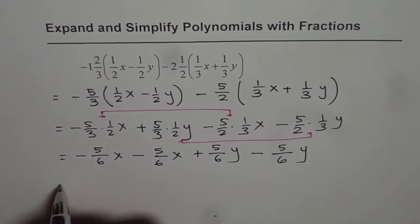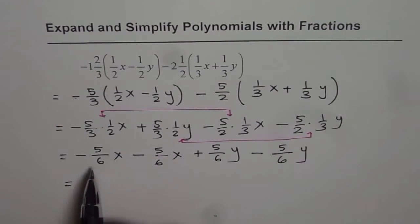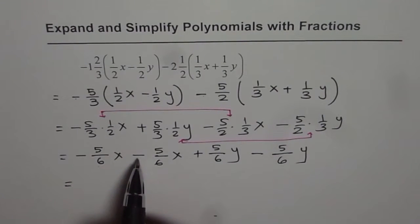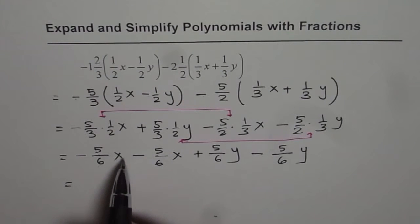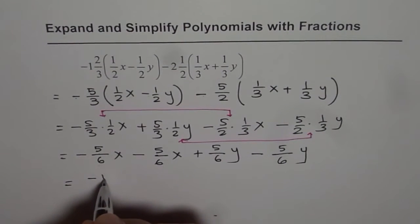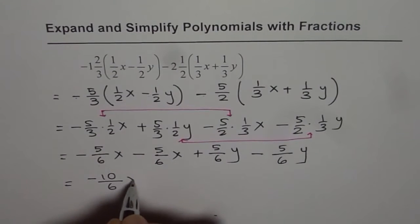Now in this case what do we get? Minus 5/6x minus 5/6x. That means we have minus 10/6 and 6 is common. Minus 5 and minus 5 makes it minus 10. So we get minus 10/6x.